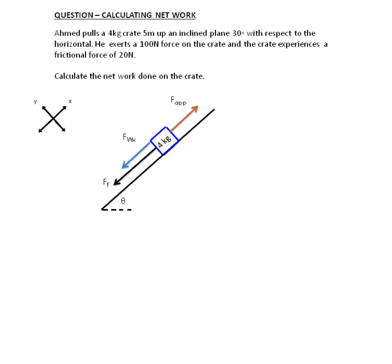Looking at this example: Ahmad pulls a 4 kilogram crate 5 meters up an inclined plane 30 degrees with respect to the horizontal. He exerts a 100 newton force on the crate and the crate experiences a frictional force of 20 newtons. Calculate the net work done on the crate.